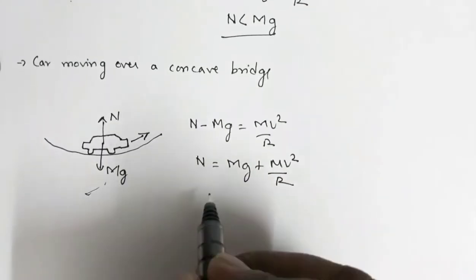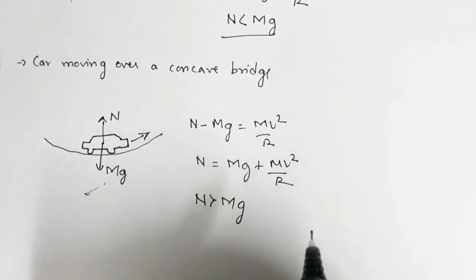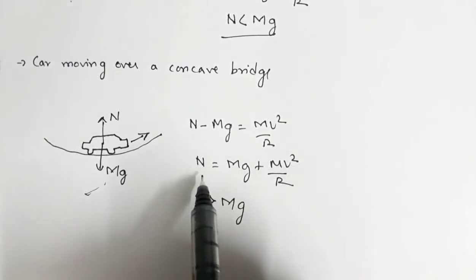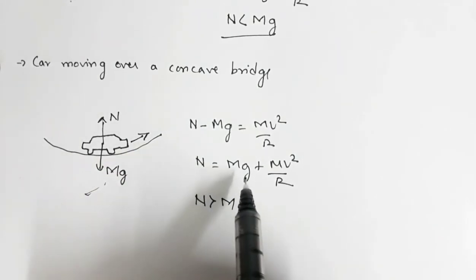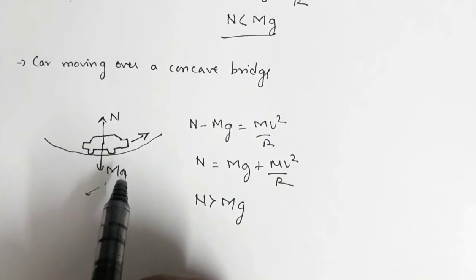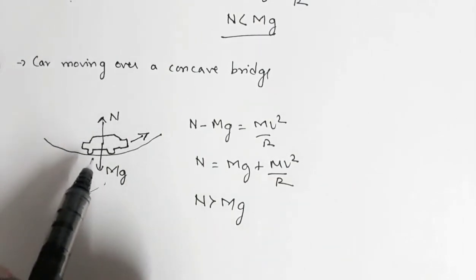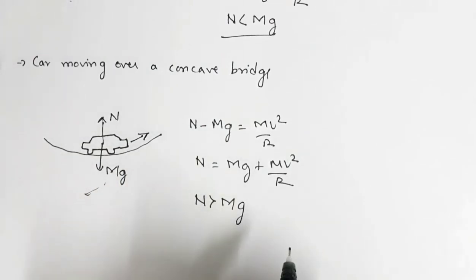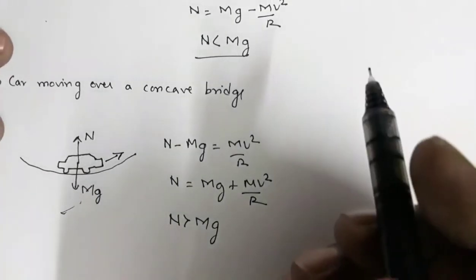Obviously in this case N is greater than mg. If the same car is stationary, N equals mg. But if it is moving with speed v, N equals mg + mv²/r. So the car will feel heavier compared to the same car standing stationary on this concave bridge.